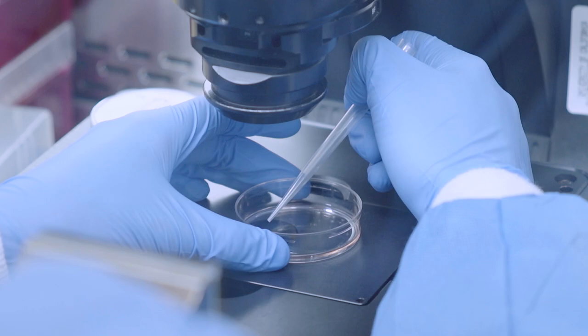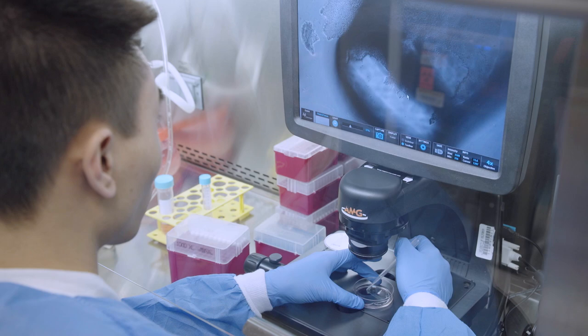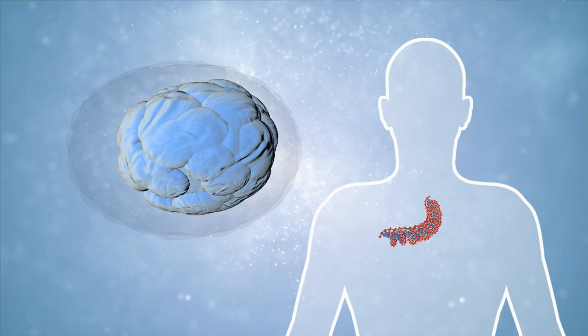The lab then carefully cultures the iPSCs, which grow in a thin layer, constantly caring for them to make sure they grow well. One reason iPSCs are so useful and important is that since they come from adult cells, they carry the genetics of the donor.